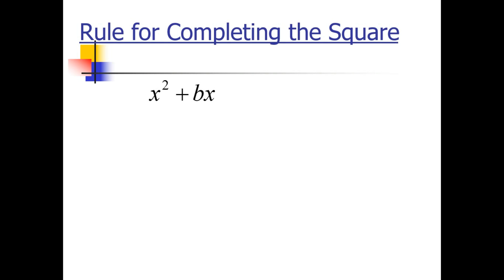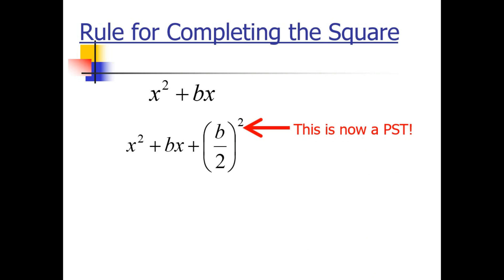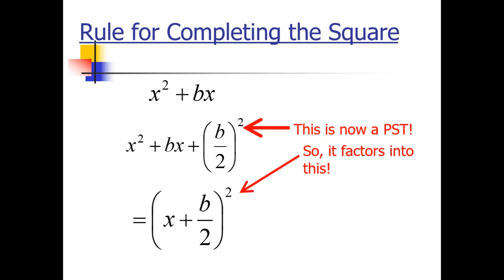What are the rules for completing the square? If we have two terms, x squared plus bx, in order for us to complete the square, we just need to get the half of b then square it. So this is now the perfect square trinomial. If we try to factor this kind of given, we will have the quantity (x plus b over 2) squared.